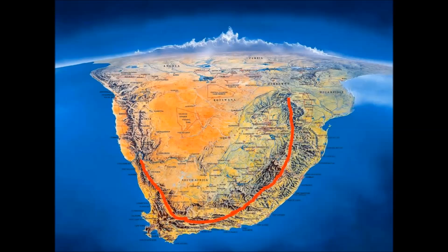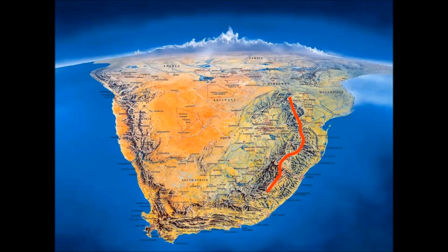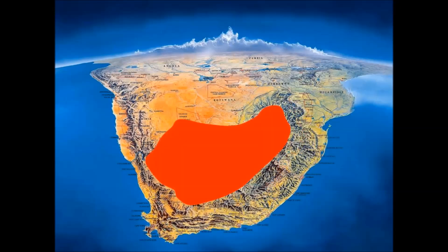There is a massive mountain range that extends along the entire coast of South Africa. This mountain range is called the Drakensberg. The eastern part of the Drakensberg mountain range is known as the Great Escarpment. The highest peak extends to 11,424 feet. The area highlighted in red is known as the interior plateau, and the majority of it lies above 4,000 feet.